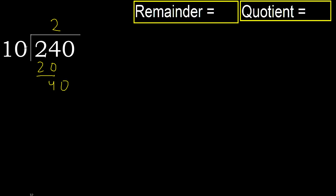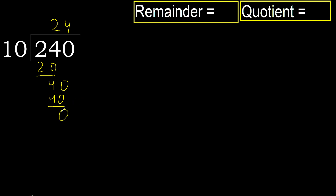40. 10 multiplied by 4 is 40, it is not greater, okay. Subtract 0, next.